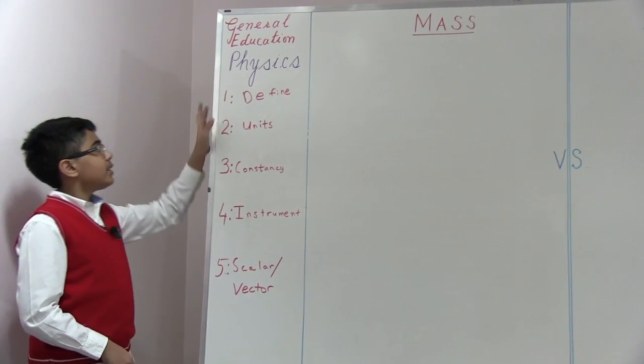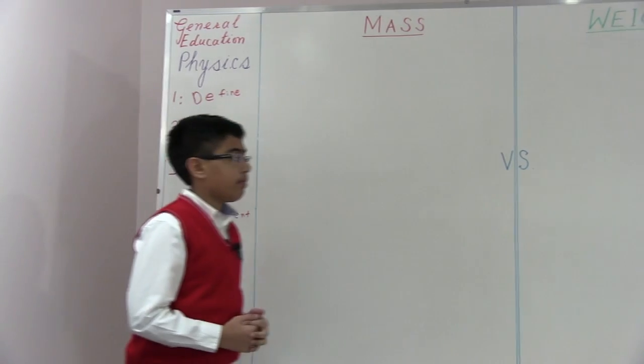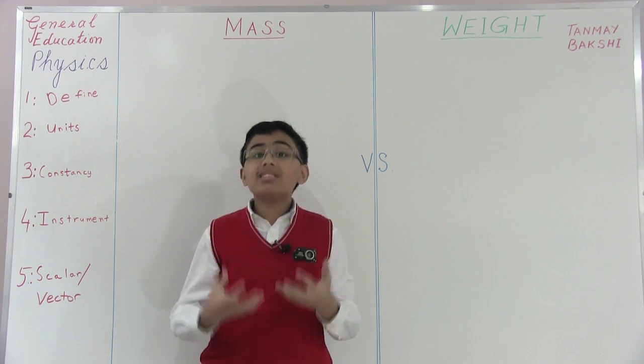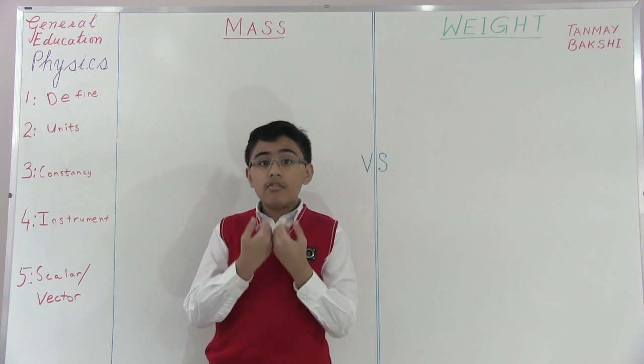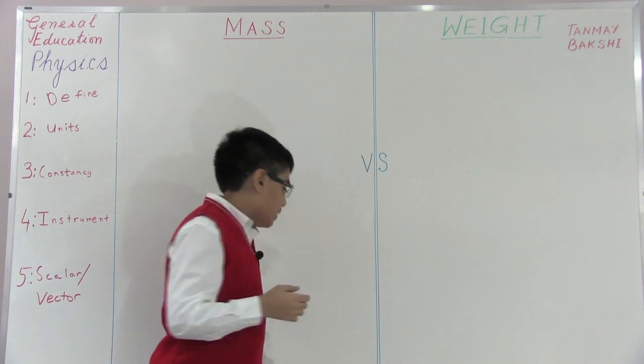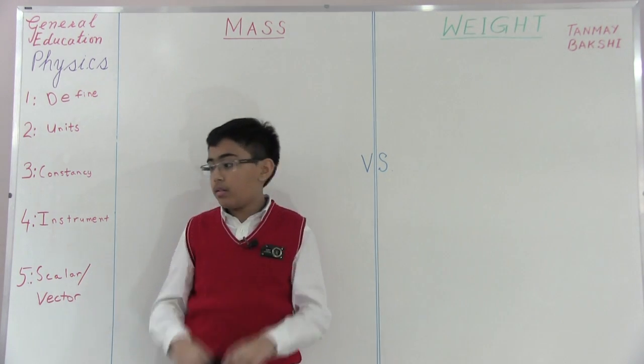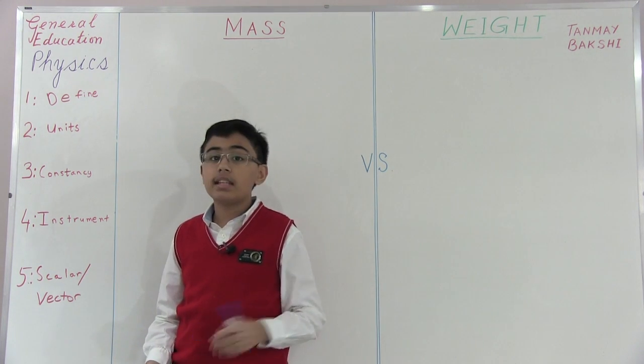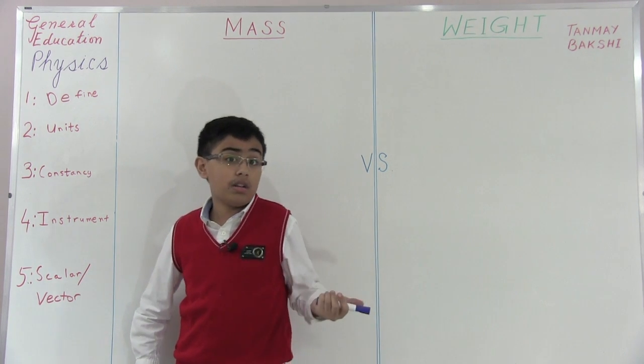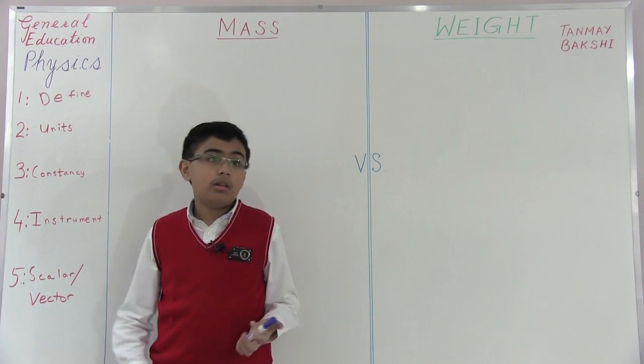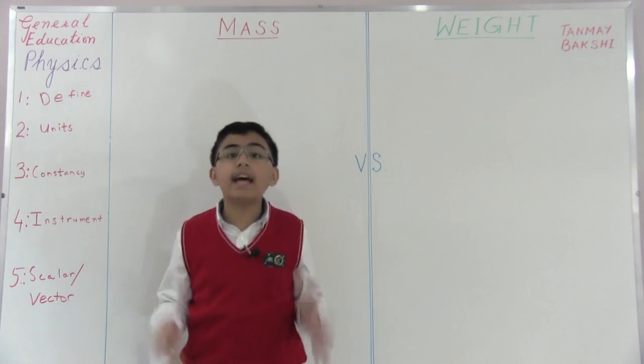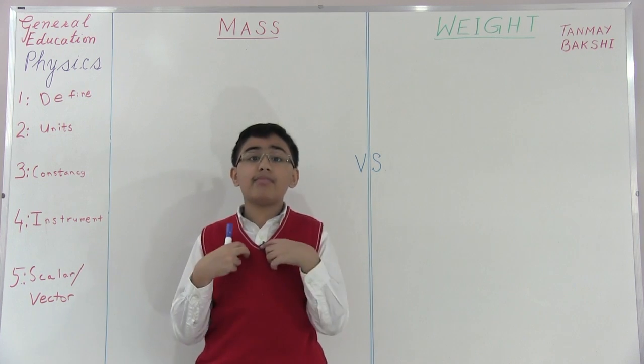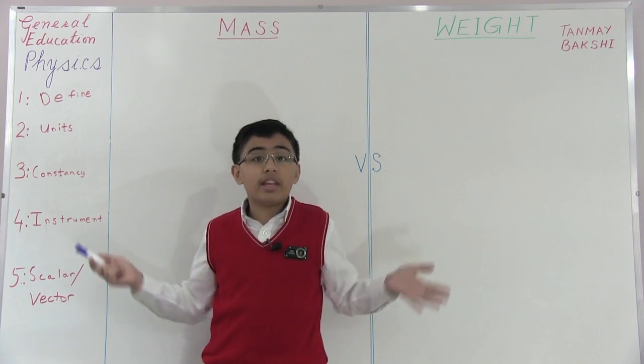Let's get started. So first I am going to define mass and weight. So now the definition of mass would be the amount of matter or the quantity of matter that some object contains, for example, this eraser, or I could even say this marker, or I could even say the earth, or the sun, or the moon, or Mars, or Jupiter, or Neptune. All those planets, everything has mass. Everything. Even the air you are breathing right now has mass. You have mass. I have mass. This shirt has mass. This microphone has mass. Everything does.